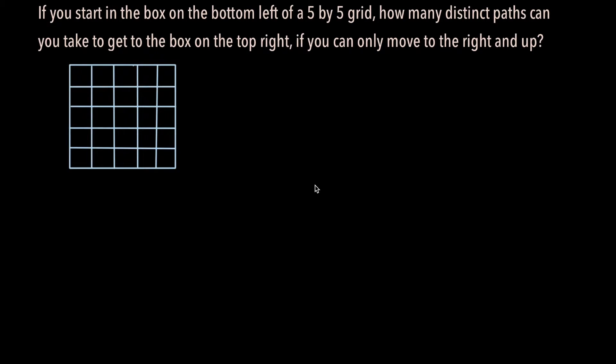In this video we will cover the following problem. If you start in the box on the bottom left of a 5x5 grid, how many distinct paths can you take to get to the box on the top right if you can only move to the right and up?